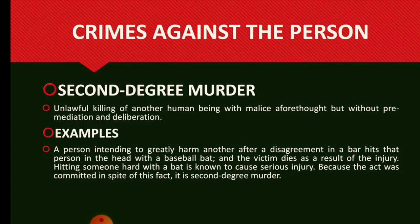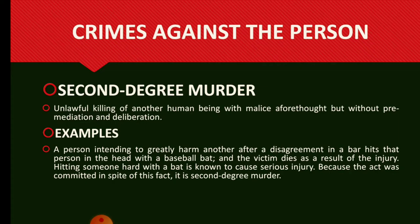Second Degree Murder. Unlawful killing of another human being with malice aforethought but without premeditation and deliberation. Example: A person intending to greatly harm another after a disagreement in a bar hits that person in the head with a baseball bat and the victim dies as a result of the injury. Hitting someone hard with a bat is known to cause serious injury; because the act was committed in spite of this fact, it is second degree murder.